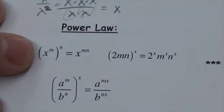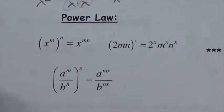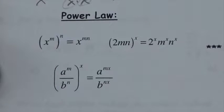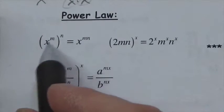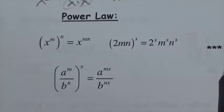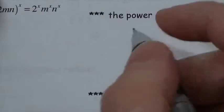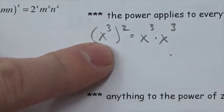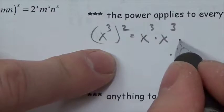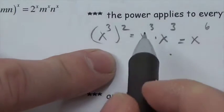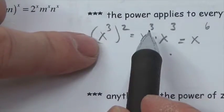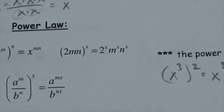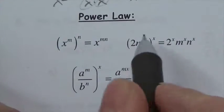Next is the power law. If we've got a power of a power, we simply multiply the exponents together. For example, x cubed squared means x cubed multiplied by x cubed. Applying the multiplication rule, you add those two exponents to get x to the sixth. But think about that — I have two threes, and adding two threes is just three times two. That's why the rule works.